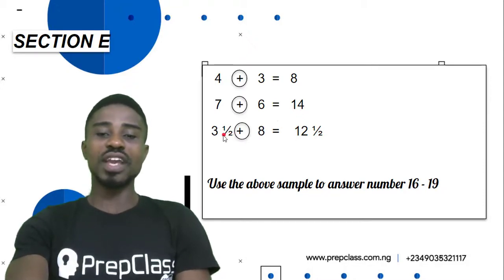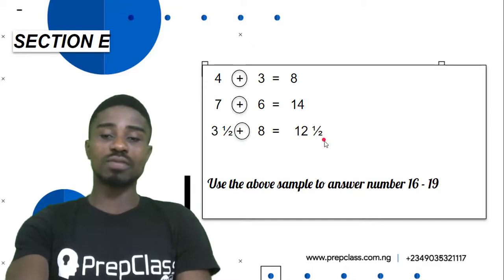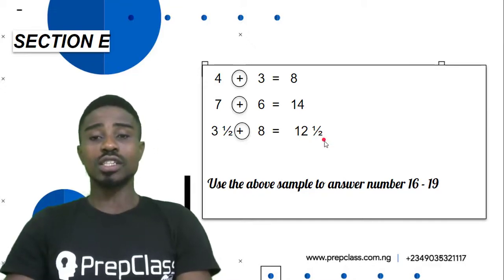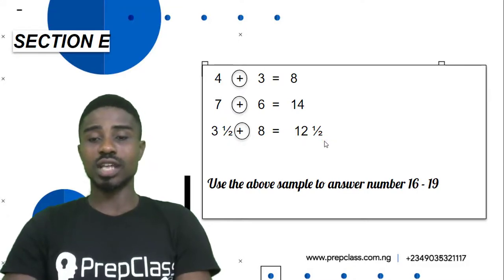For this, it is the same approach. 7 plus 6 is 13 plus 1 which will give us 14. For this, it will be 3 and a half plus 8 and that will give us 11. Then 11 plus 1 will give us 12 and a half. So with this knowledge, we are going to be using it in solving questions 16 to 19. Let's try them out.